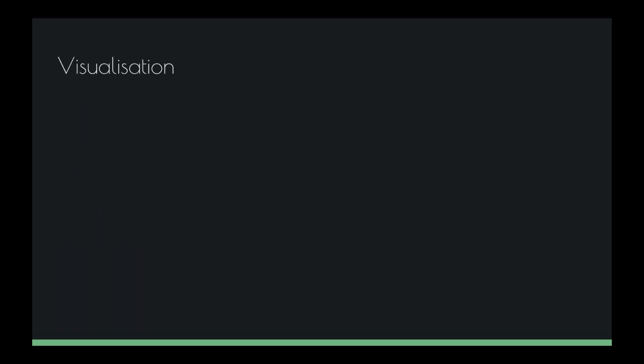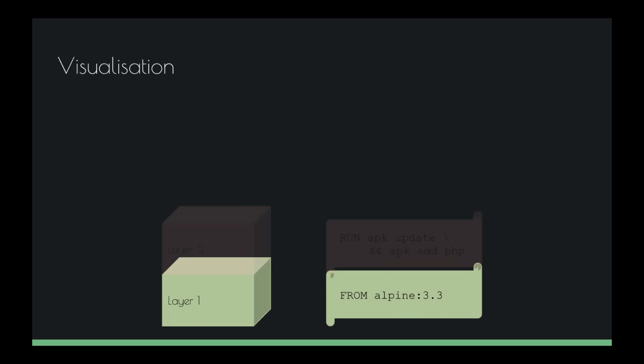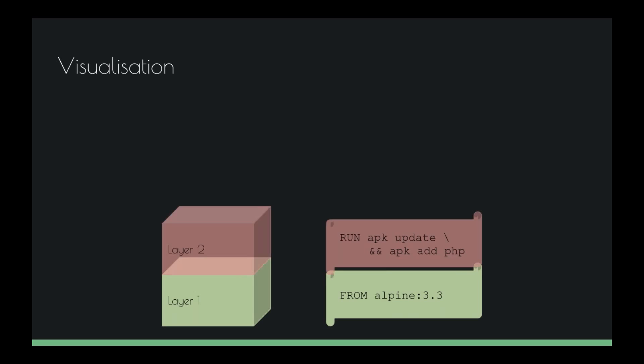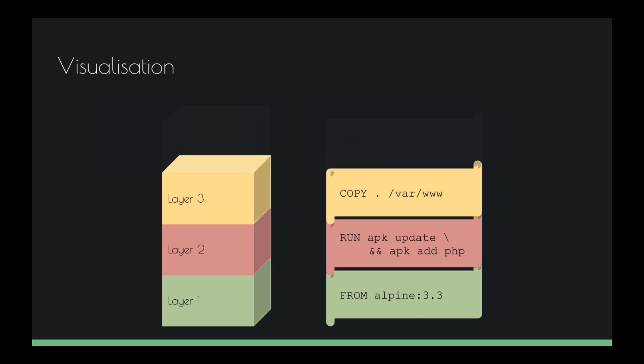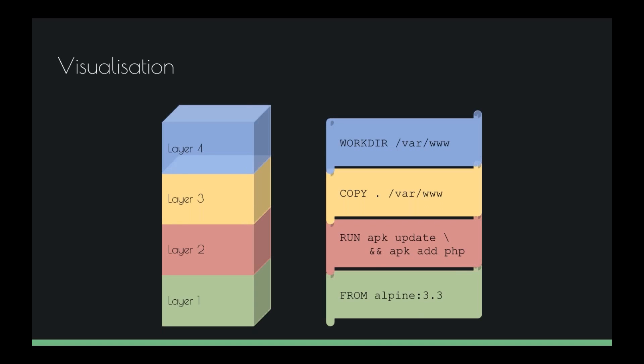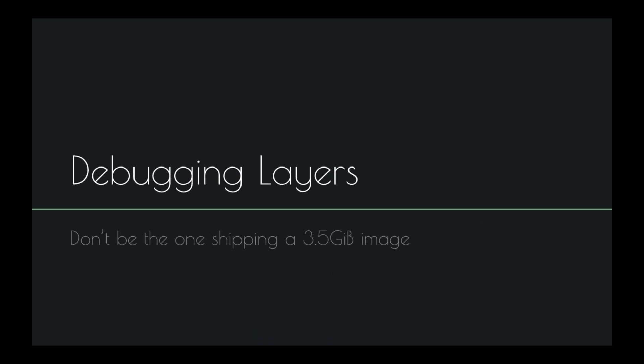Let's look at what this is going to look like as we do our docker build. We start with FROM — that's our base image, layer 1. After that, we provision by installing PHP onto our Alpine-based system — this creates layer 2, sitting on top of layer 1. Layer 3 is our COPY, and layer 4 is our WORKDIR. The thing we have to worry about is: what are the sizes of my layers, and what are they going to contribute to the total size of my image? Nobody wants to be shipping a 3-gig image at production time.